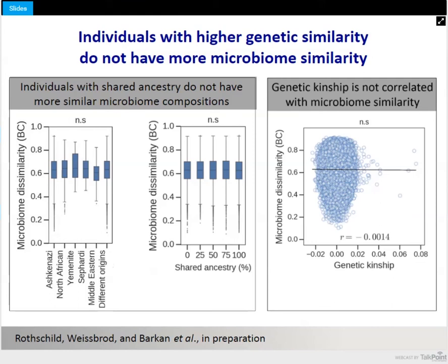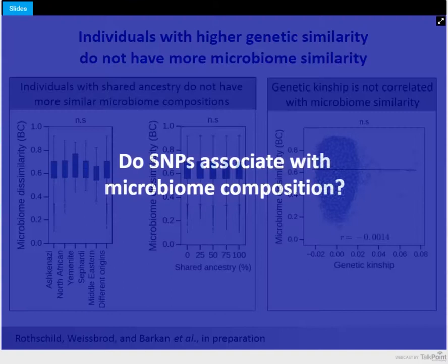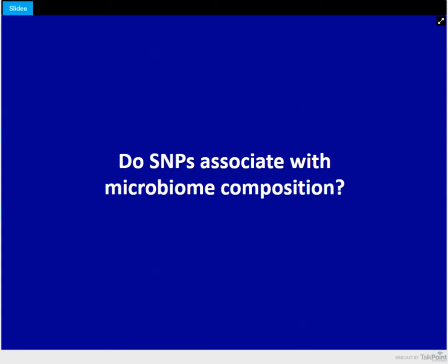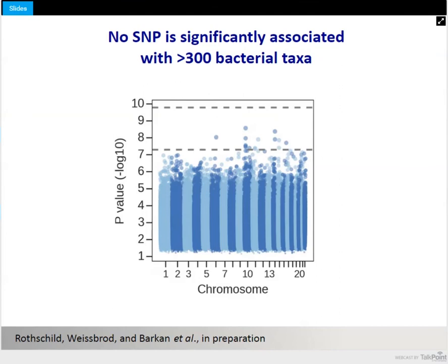As another global measure, one can look at genetic kinship — overall similarity between the genetics of any pair of individuals — and compare that to their similarity in the microbiome. Here too we find zero correlation between the two. On global measures, we find no relationship between microbiome and human genetics. We then looked for more fine-resolution associations at the level of individual SNPs using standard genome-wide association studies. A few bacterial taxa passed the standard cutoff of 5×10⁻⁸, but when we applied multiple hypothesis correction for over 300 bacterial taxa, we found no significant association between any SNP and any bacterial taxa in our data.